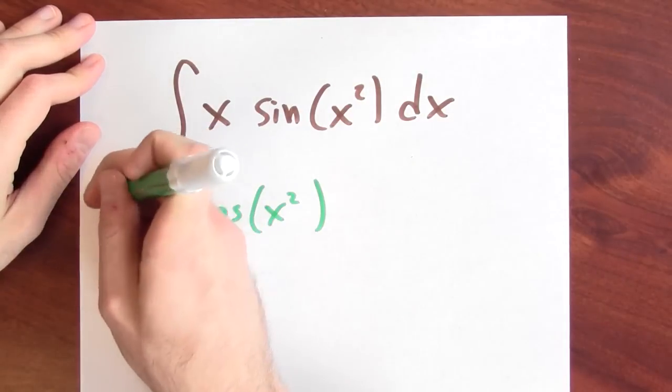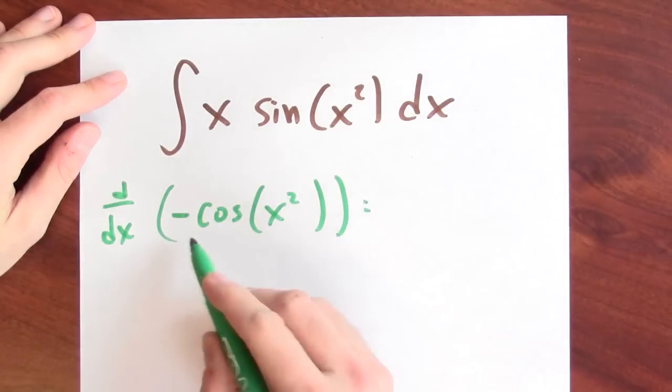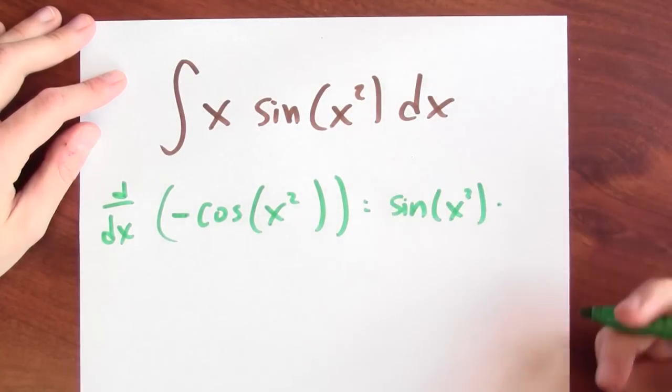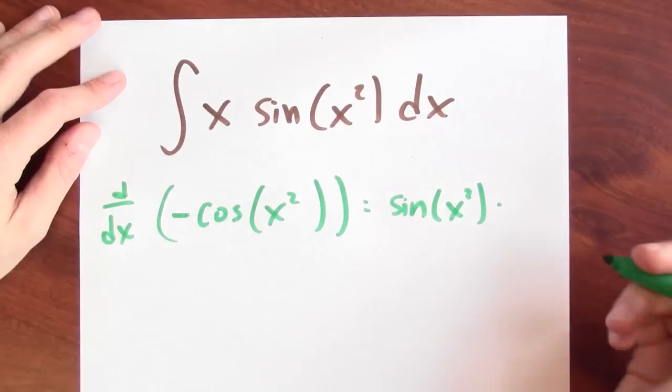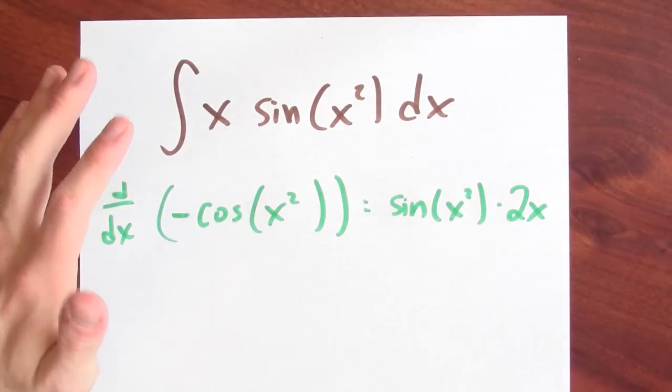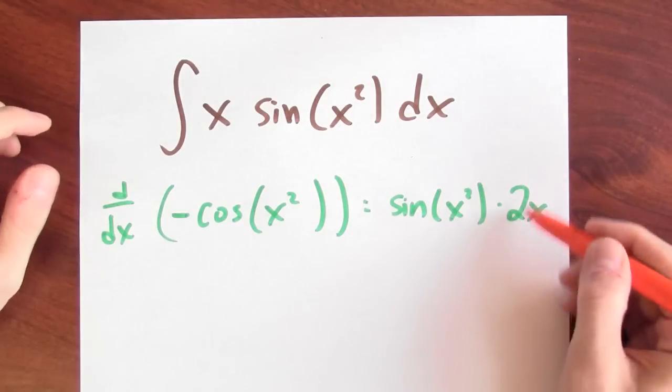Let's try. So if I differentiate this, what do I get? Well, the derivative of the outside function is sine evaluated at the inside function times the derivative of the inside function, which in this case is 2x. And then I see, whoops, I'm off. I didn't quite get an anti-derivative. I'm off by this factor of 2.